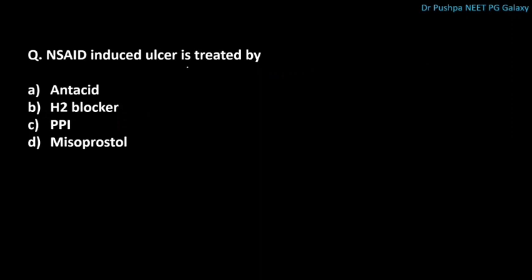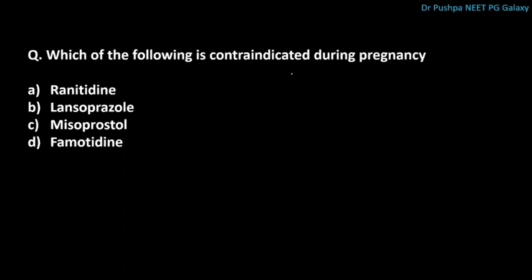NSAID-induced ulcer is treated by which drug? The correct answer is PPI, i.e., proton pump inhibitor. Which of the following is contraindicated during pregnancy? The correct answer is misoprostol, which is contraindicated during pregnancy.